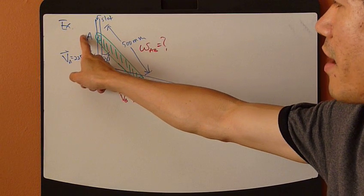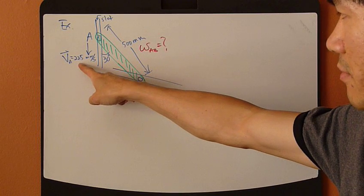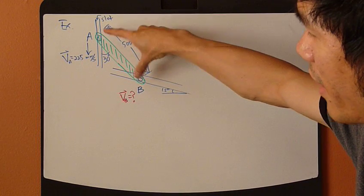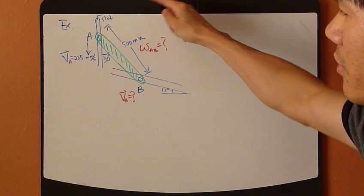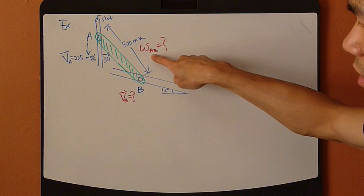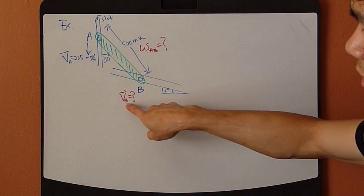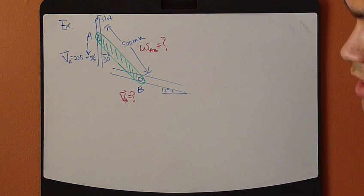Velocity of A is given at this instant. It's 225 millimeters per second. The length of the rigid body is given, 500 millimeters. You are asked to find the angular velocity of the rigid body at this instant, as well as velocity of B at this instant.